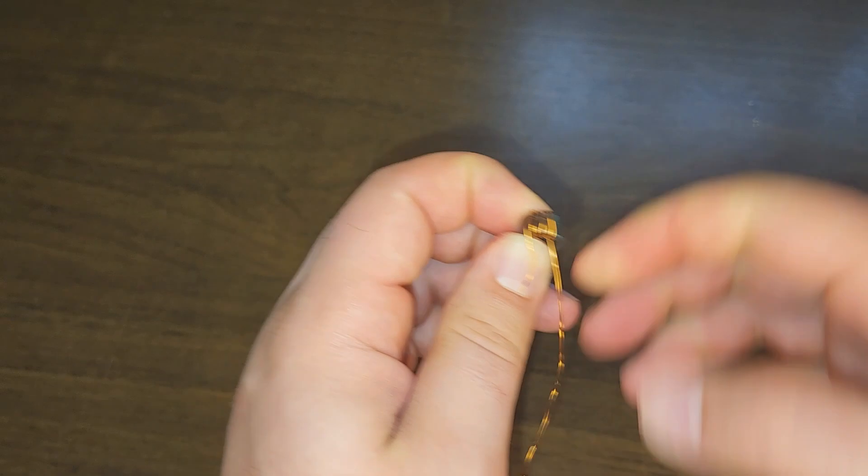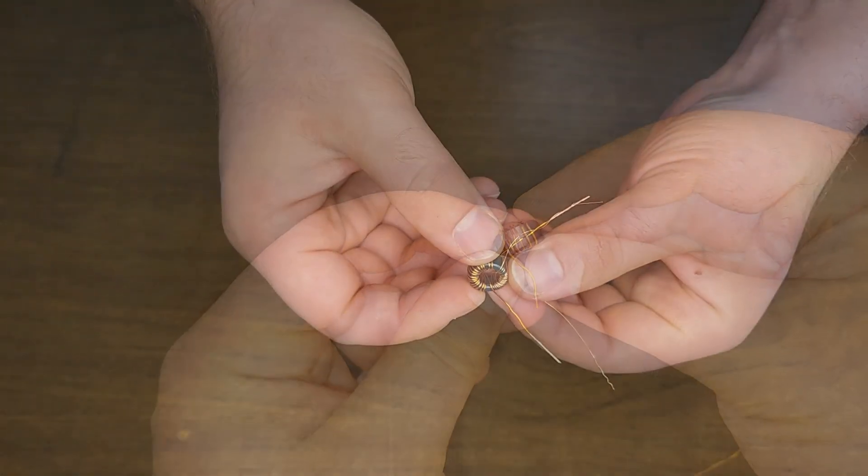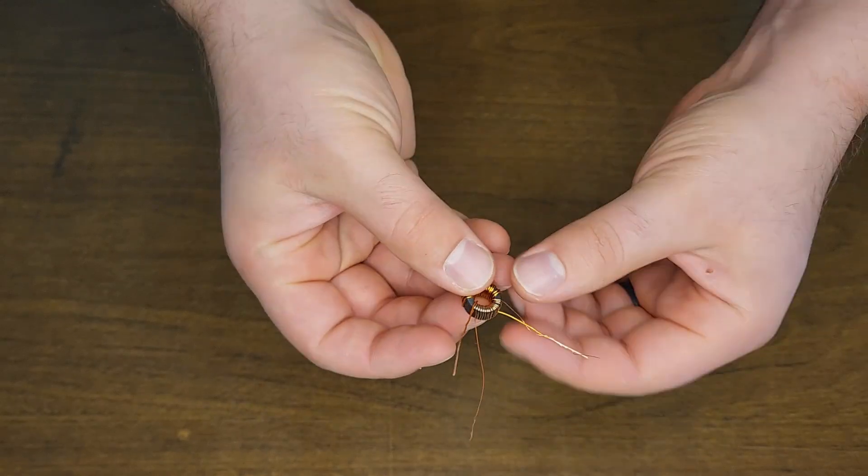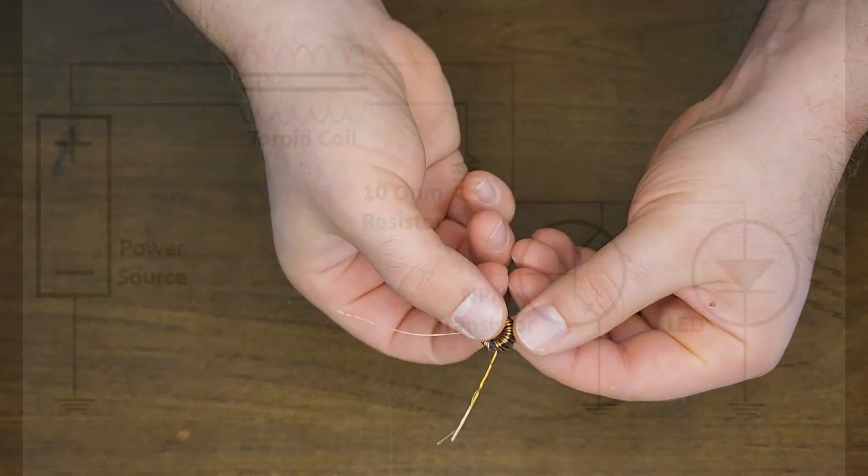The trick is that the two wires need to be wound in opposite directions. One clockwise, the other counterclockwise, or else it won't work. In my example you can see both windings on one side are connected and on the other side they are not.